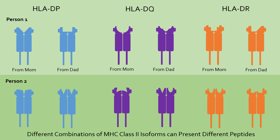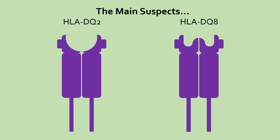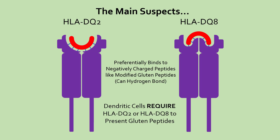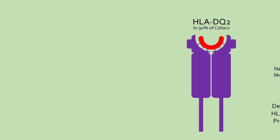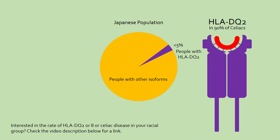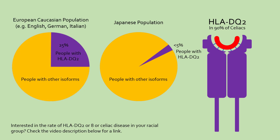The only isoforms that can bind to gluten peptides are HLA-DQ2 and HLA-DQ8, which bind extremely well to negatively charged peptides, such as the gluten peptides modified by tissue transglutaminase as mentioned earlier. Without HLA-DQ2 or DQ8, dendritic cells cannot present gluten peptides to activate T-cells. So it makes sense that virtually all people with celiac disease have either HLA-DQ2 or DQ8. The prevalence of these isoforms varies between racial groups — for example, HLA-DQ2 is found in less than 5% of Japanese people, but in around 25% of European Caucasians. This explains why the rates of celiac disease differ so widely across the world.